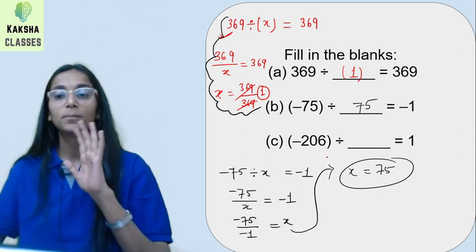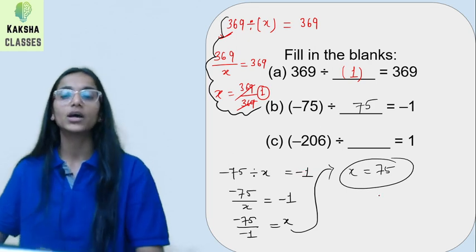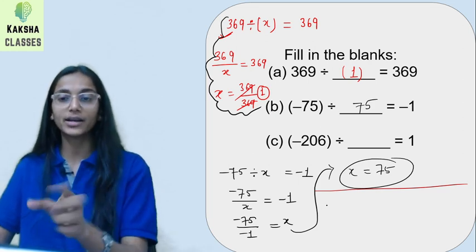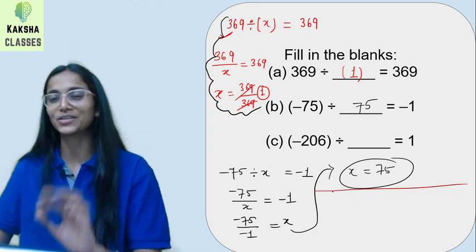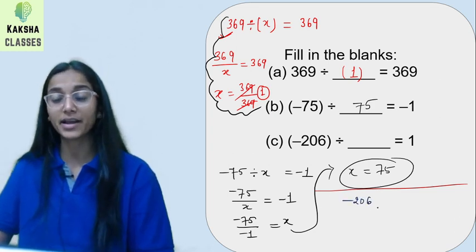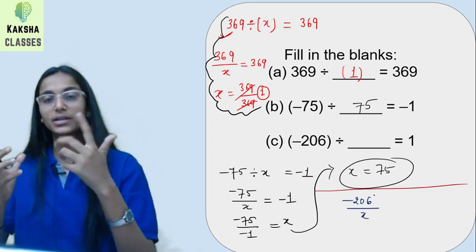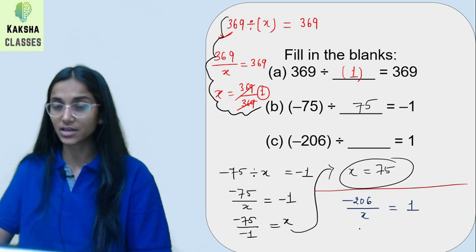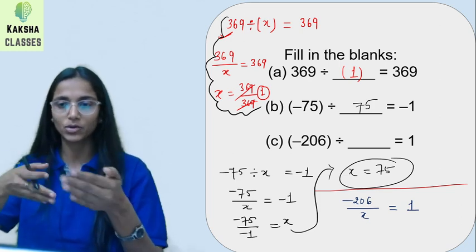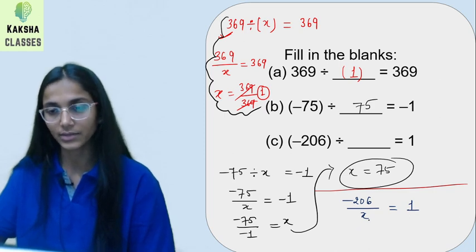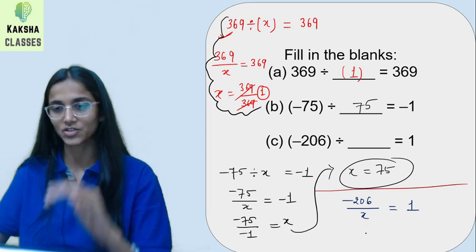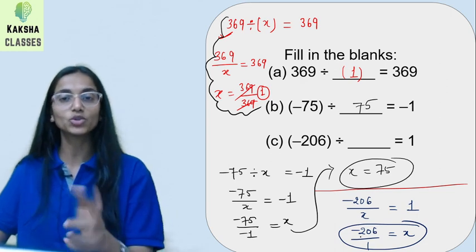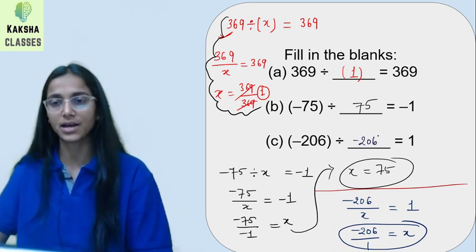The last one: minus 206 divided by a number gives equals to 1. This is a very important task — if you have written the sign accurately, you will get the correct number. So minus 206 divided by x is kept in numerator upon denominator form, equals to 1. We cross multiply: minus 206 upon 1 equals x. So x equals to minus 206. The answer is complete.